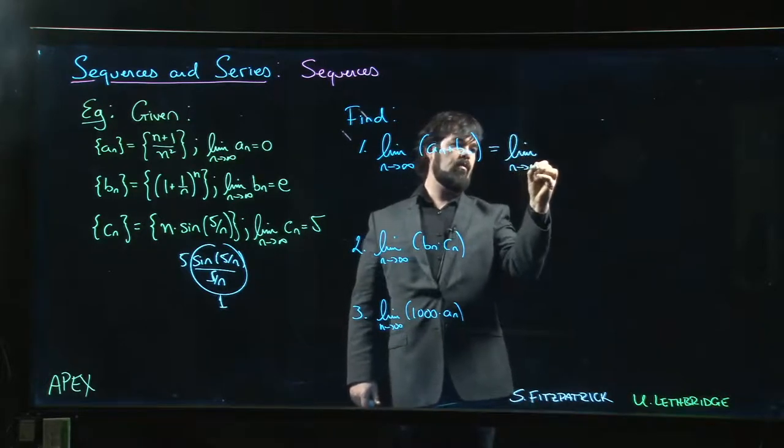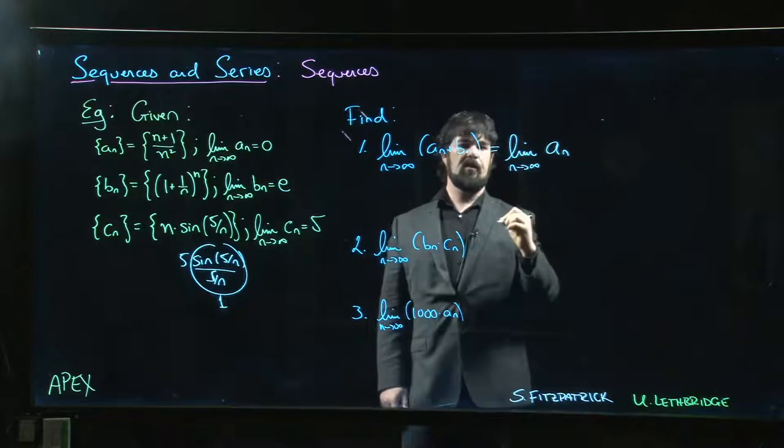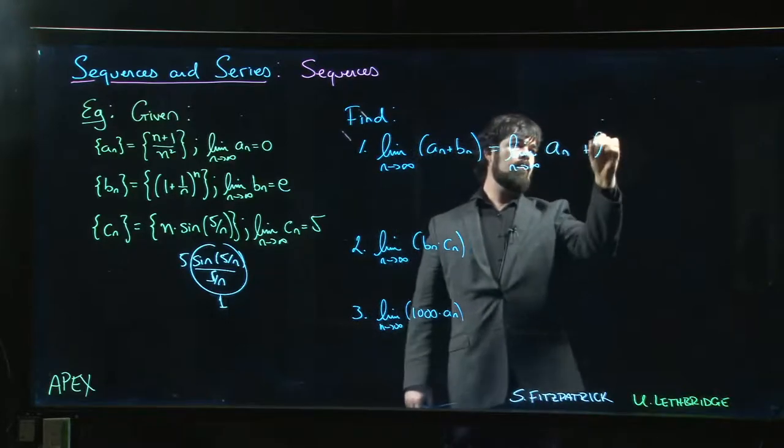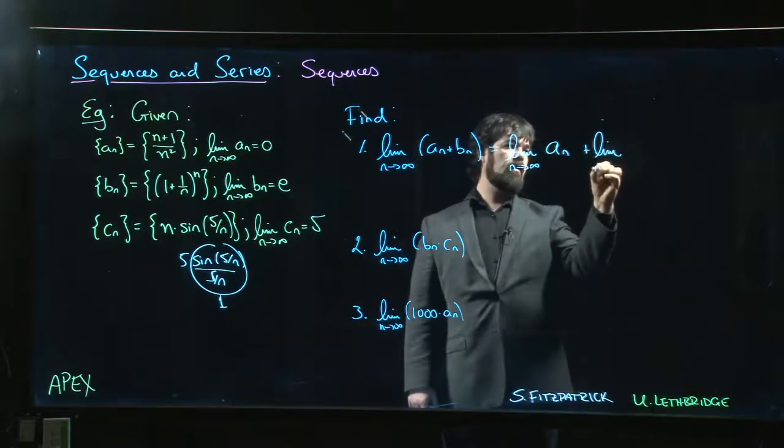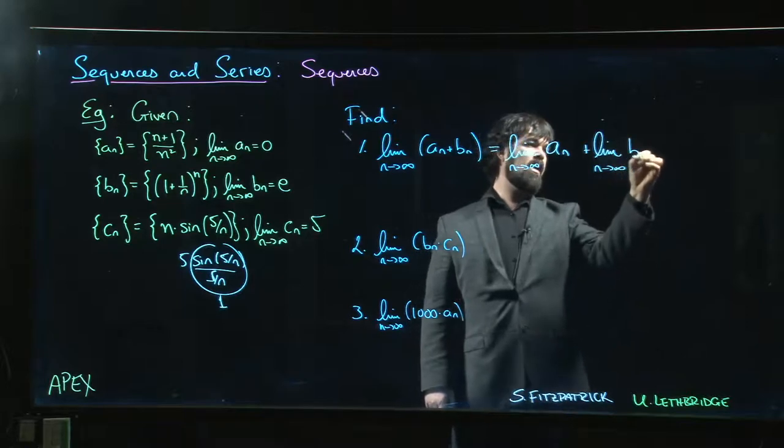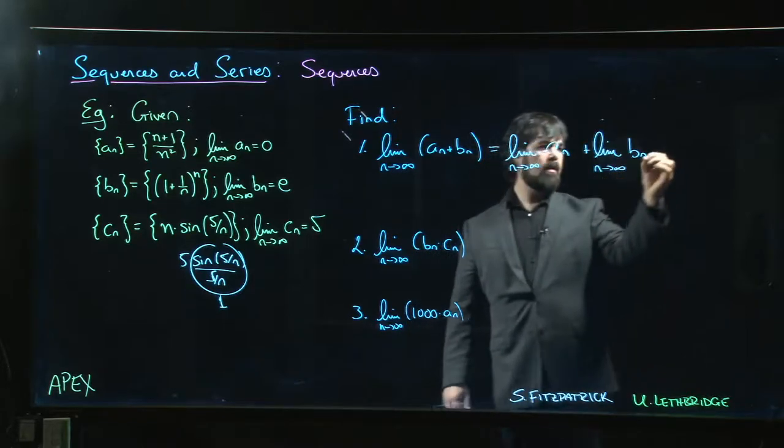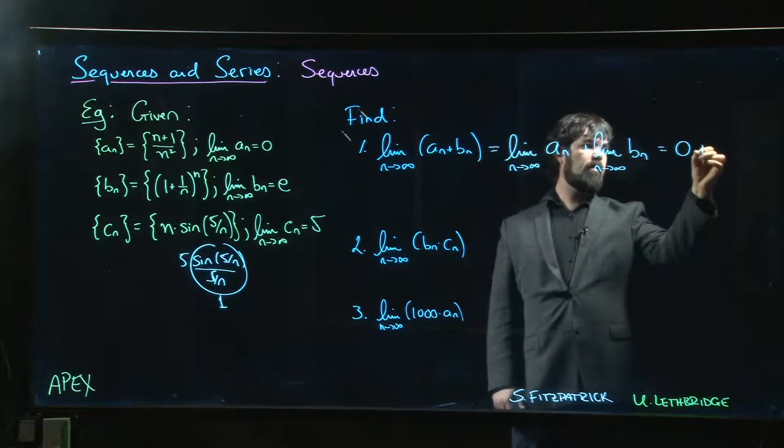So we can write limit as n goes to infinity of a_n plus the limit as n goes to infinity of b_n. And the first limit is zero, the second limit is e, and so the result is going to be e.